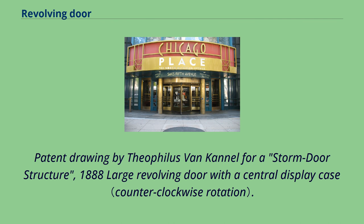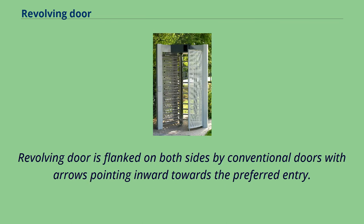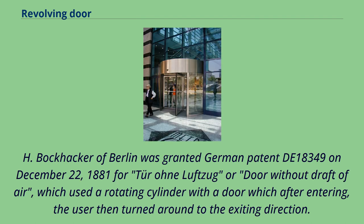Patent drawing by Theophilus Van Kennel for a storm door structure, 1888, showing a large revolving door with a central display case. H. Bach Hacker of Berlin was granted German patent DE 18349 on December 22, 1881, for a door without draft of air, which used a rotating cylinder with a door which, after entering, the user then turned around to the exiting direction.